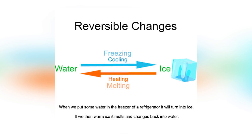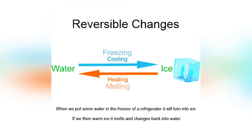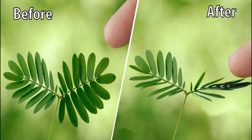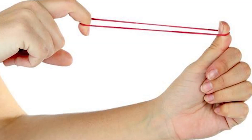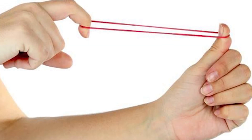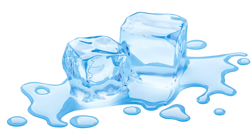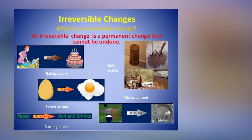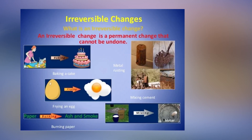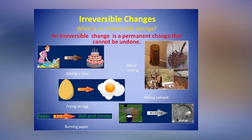Reversed means to get back to the original state. For example, touch-me-not plant, stretching of a rubber band, and melting of ice. Next, irreversible changes — changes which cannot be reversed to get back to the original state are known as irreversible changes.